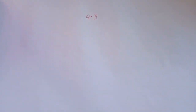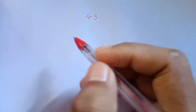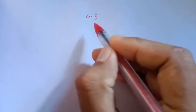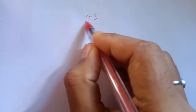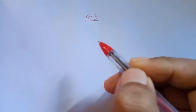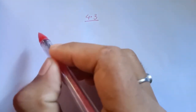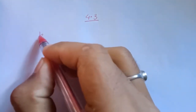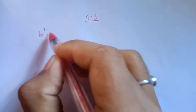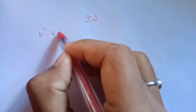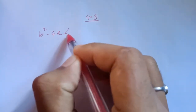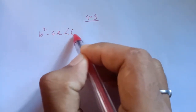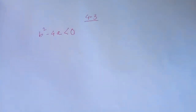The discriminant formula is b squared minus 4ac less than or equal to 0. So b is b squared.